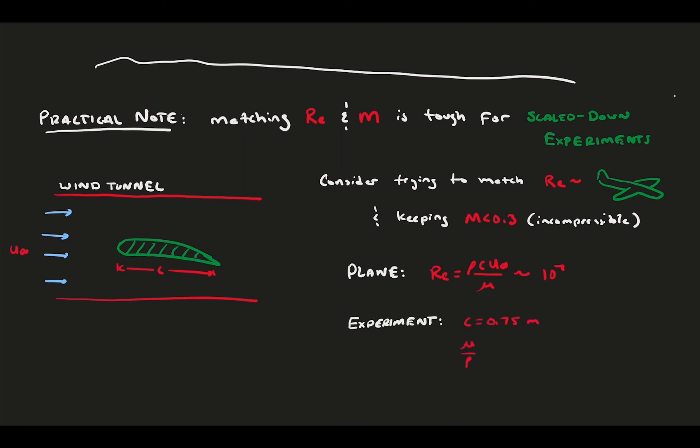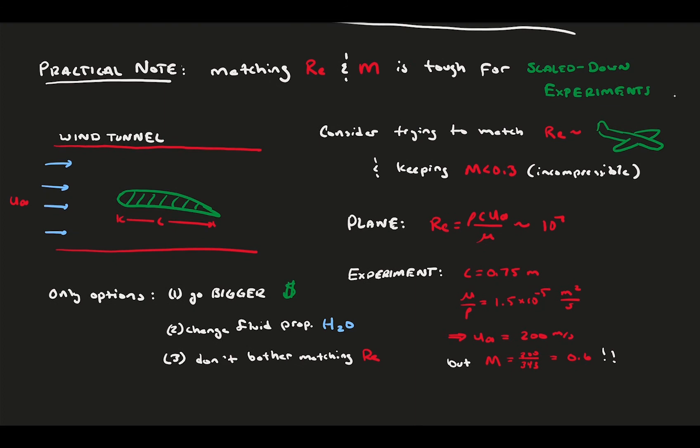The Reynolds number in flight can reach 10 to the 7. For our size foil and the fluid properties of air, we would need to run the tunnel at 200 meters per second to approach this Reynolds number. However, if we did that, we would be at Mach 0.6, which is sufficient to stay subsonic but far from being considered truly incompressible. Our only options are to either make the foil bigger and increase the chord, but this requires a bigger facility and a lot more money. Otherwise, we could try to change our fluid properties and move to something like water, but this rarely helps because it's much harder to make water move fast than it is to make air move fast.